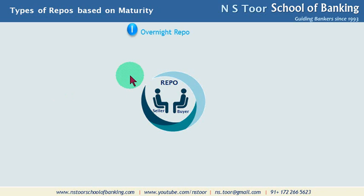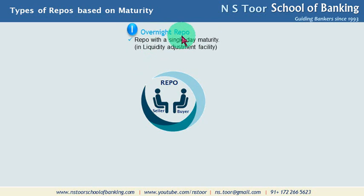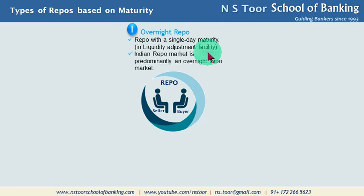Number one: overnight repo. Overnight repo means a repo transaction which has a maturity of only one day. A repo with a single-day maturity is called an overnight repo. The Reserve Bank of India's repo transactions offer liquidity to the banking system under the Liquidity Adjustment Facility. The Indian repo market is predominantly an overnight repo market.